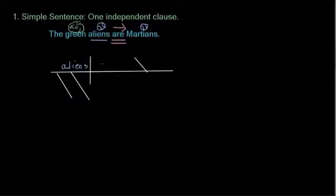We have our verb, which is a linking verb, are. And now we have what we call the subject complement, which in this case is a predicate nominative. Martians. Let's get our modifiers in quickly. We have the article modifier the, and we have green.